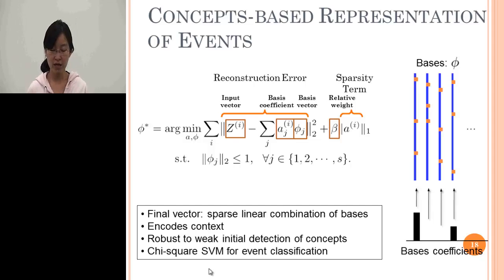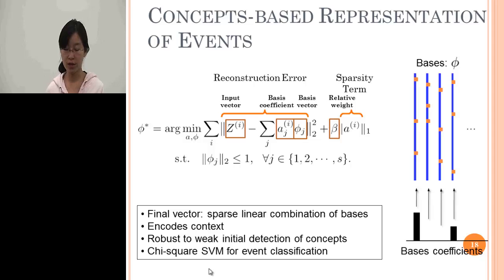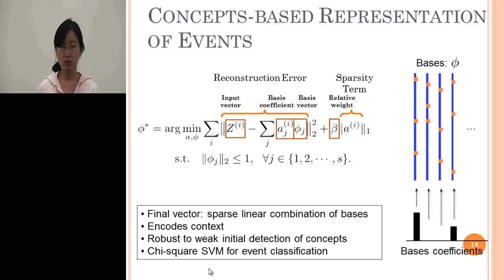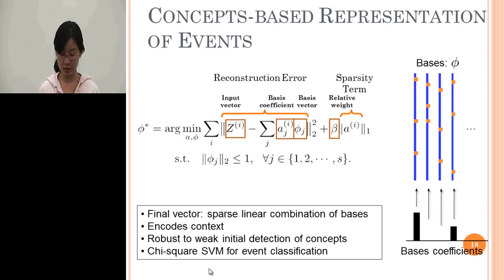After obtaining the coefficients, we use the chi-square SVM for event detection and classification.